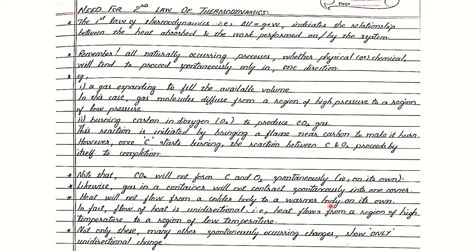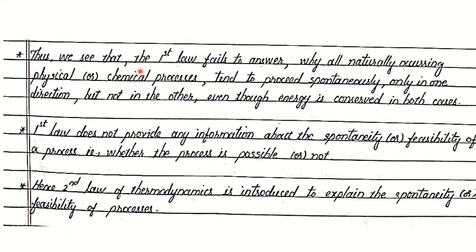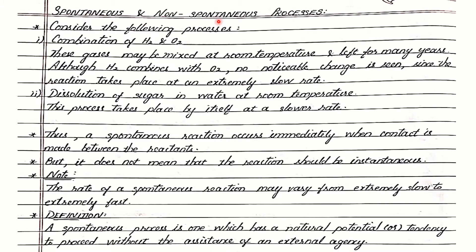Many other spontaneously occurring changes show only unidirectional change. Thus, we see that the first law fails to answer why all naturally occurring physical or chemical processes tend to proceed spontaneously only in one direction, but not in the other, even though energy is conserved in both cases. First law does not provide any information about the spontaneity or feasibility of processes. For this reason, the second law of thermodynamics is introduced in order to explain the spontaneity or feasibility of processes.